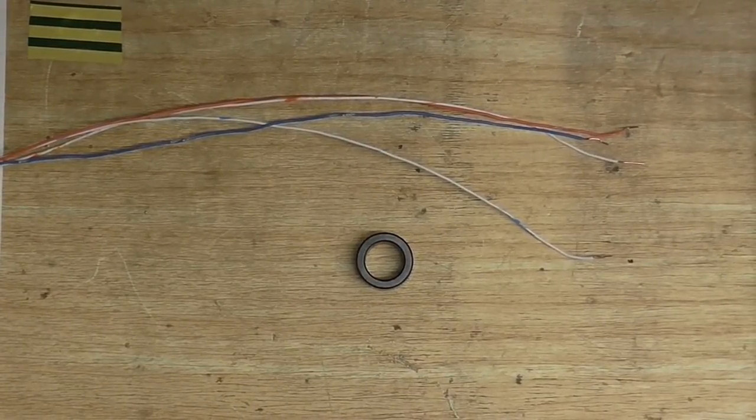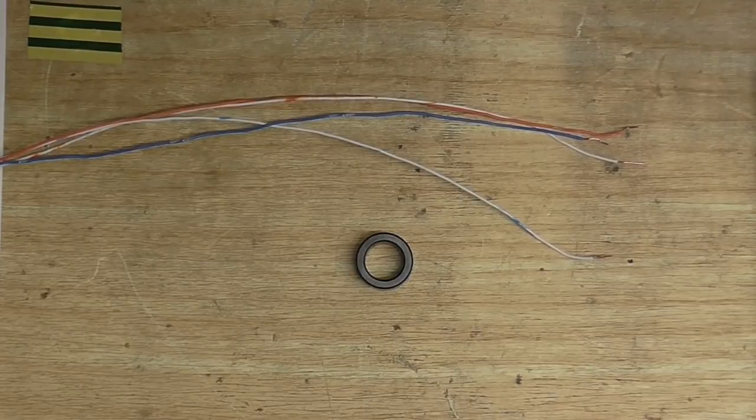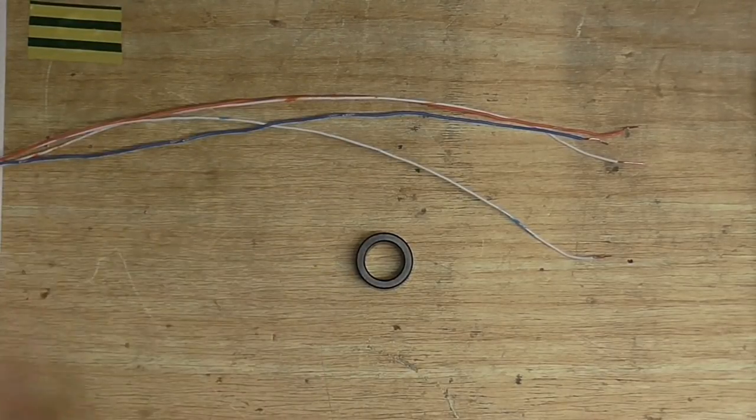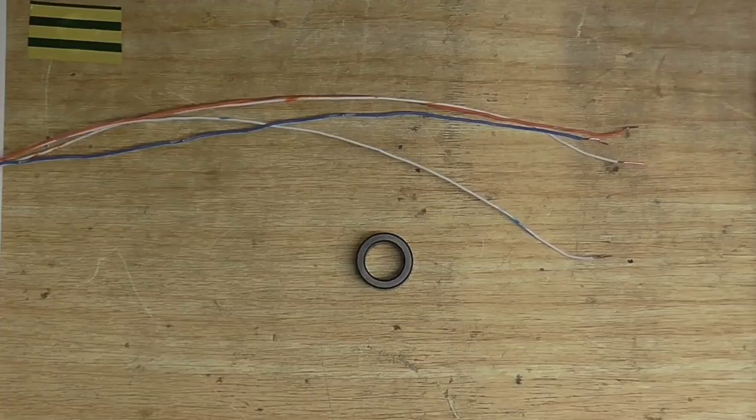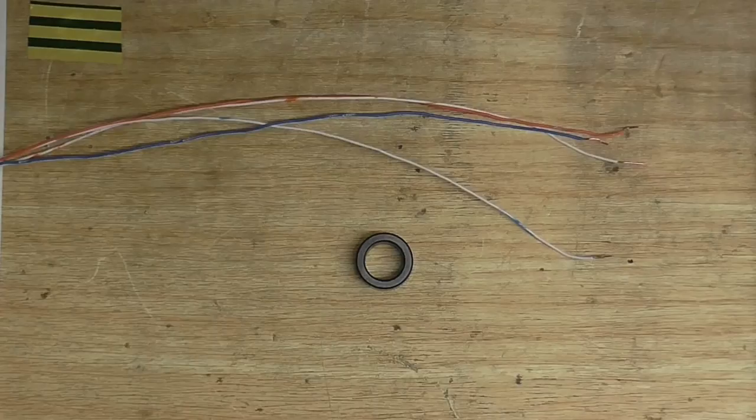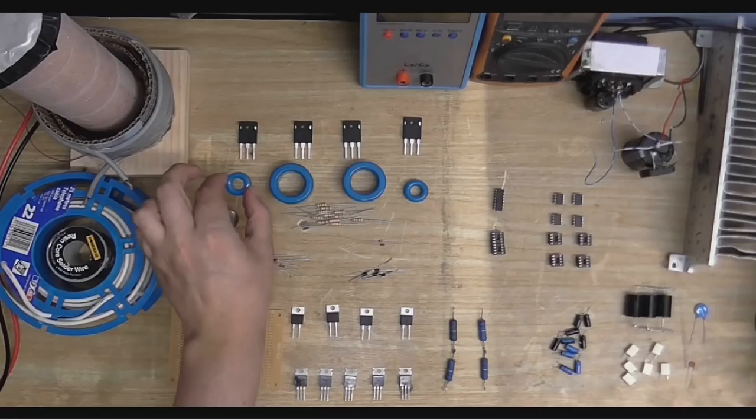So, let's wind ourselves a gate drive transformer. Now, I'm using a core that came out of a common mode filter choke. These usually make good gate drive transformer cores. Or you could just simply buy your own. And I recommend if you do buy your own cores, you get N30 grade. And no bigger than about 23 millimeters diameter.